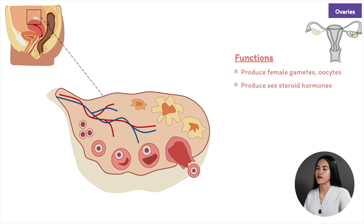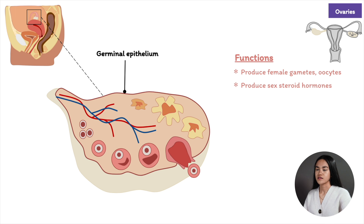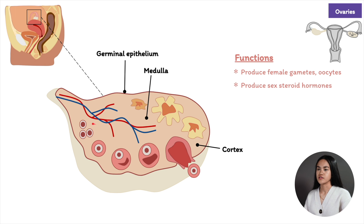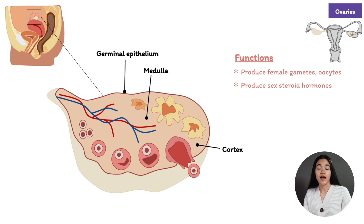Zooming in on the ovary, the surface is formed by simple cuboidal germinal epithelium. The cortex contains connective tissue and ovarian follicles, each of which contains an oocyte. The medulla is formed by loose connective tissue and a neurovascular network. These follicles containing oocytes will be covered in the menstrual cycle lecture, where we'll break down how follicles and oocytes develop, mature, and how a single egg each month is selected to be ovulated.